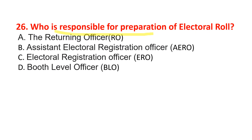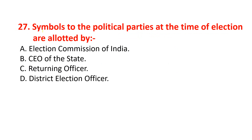Who is responsible for preparation of the electoral roll? The correct option is option C — the Electoral Registration Official. And symbols to political parties at the time of election are allotted by the Election Commission of India.